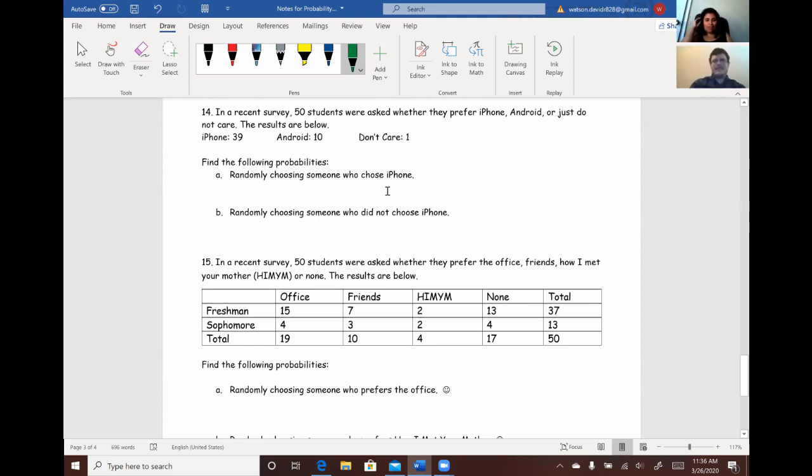So, with the debate of which one's better, iPhone or Android? We decided to ask our class which one they prefer, iPhone or Android, or they just don't care. So, in a recent survey, 50 students were asked whether they prefer iPhone, Android, or just do not care. 39 people picked iPhone, 10 people picked Android, and one person picked I don't care. So, find the following probabilities. Randomly choosing someone who chose iPhone.